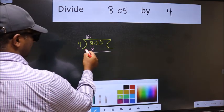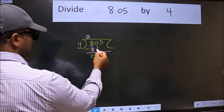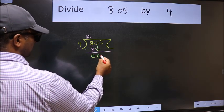Now we should subtract. We get 0. After this, bring down the beside number. So 0 down.